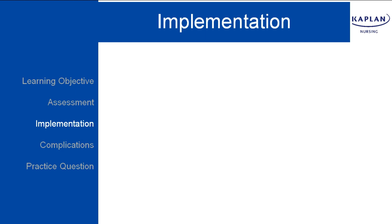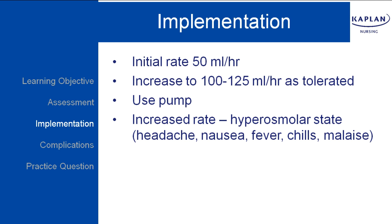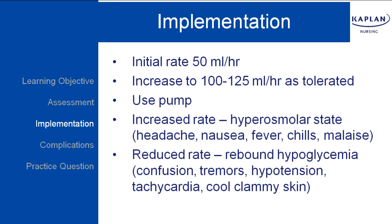The initial rate of infusion should be 50 mL an hour, and then gradually increase to 100-125 mL per hour as the client's fluid and electrolyte tolerance permits. It is important to always use a pump at a constant rate to prevent an abrupt change in the infusion rate. An increased rate will result in a hyperosmolar state and the client will experience headache, nausea, fever, chills, and malaise.